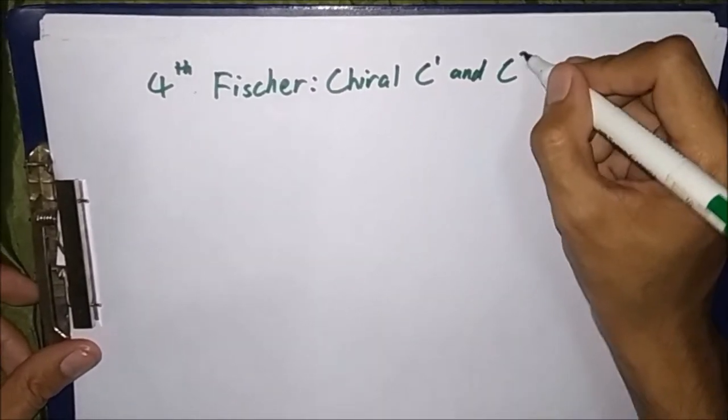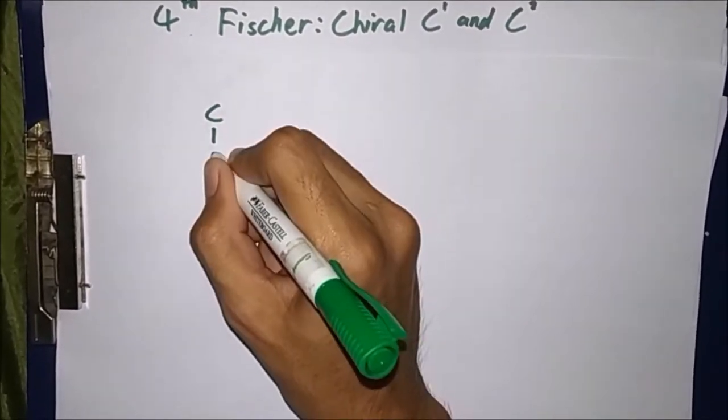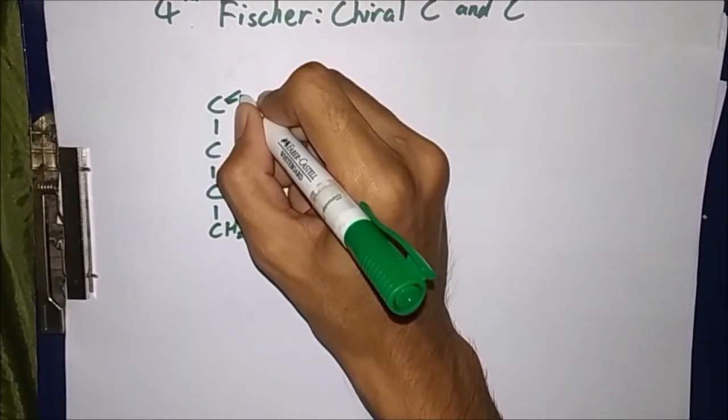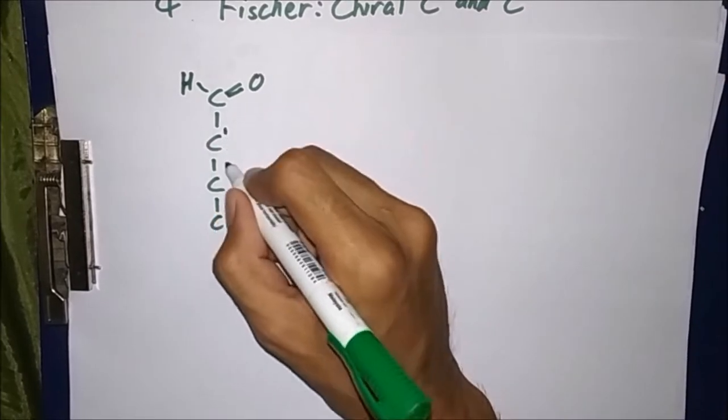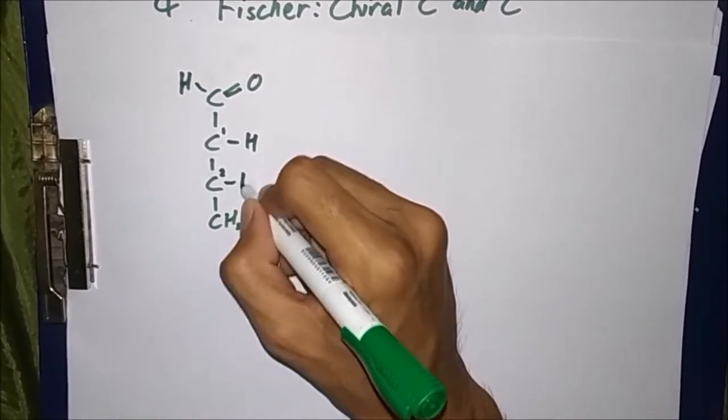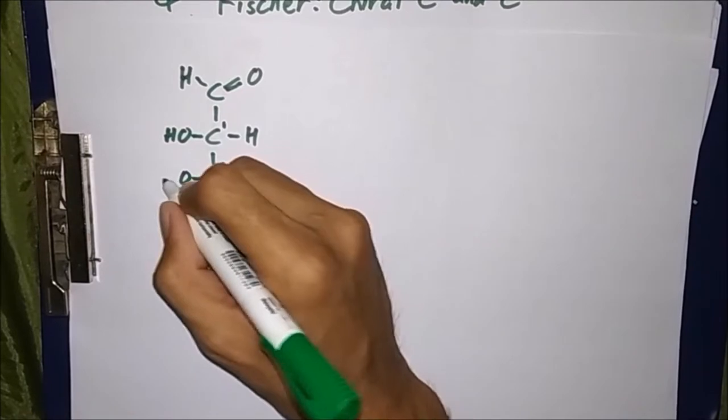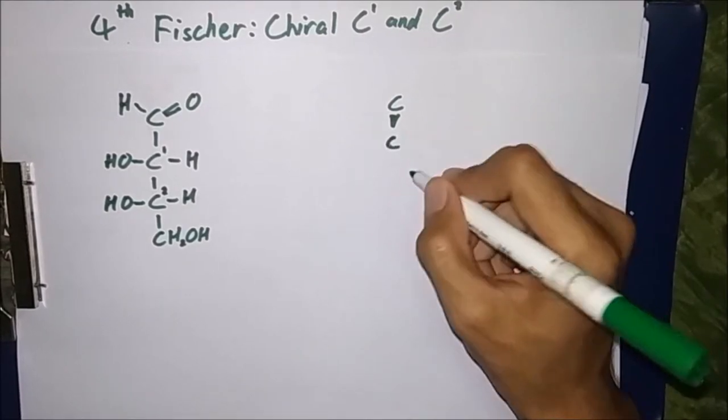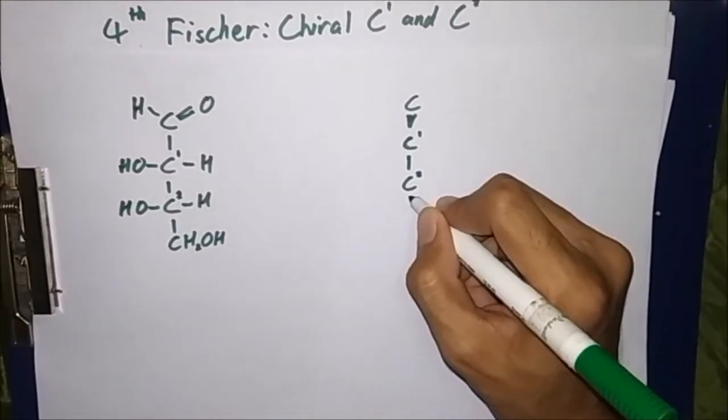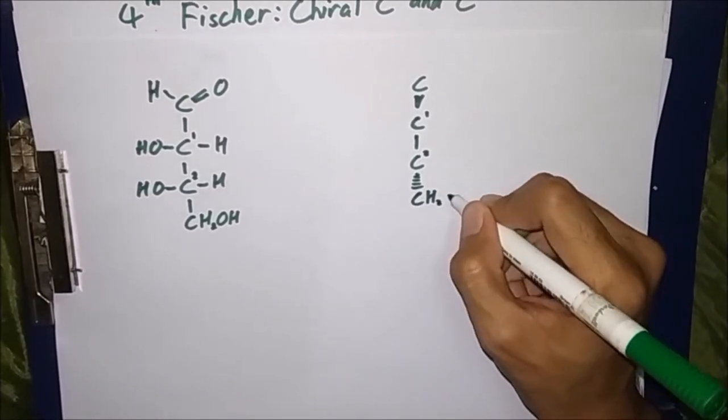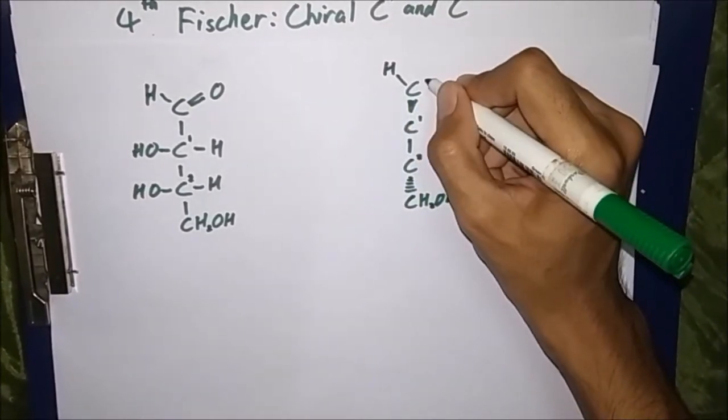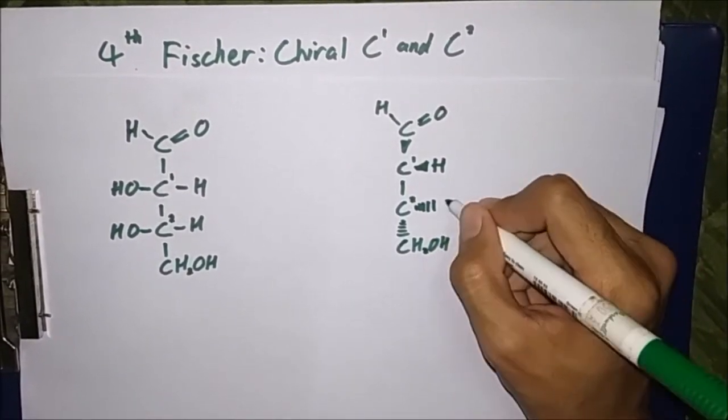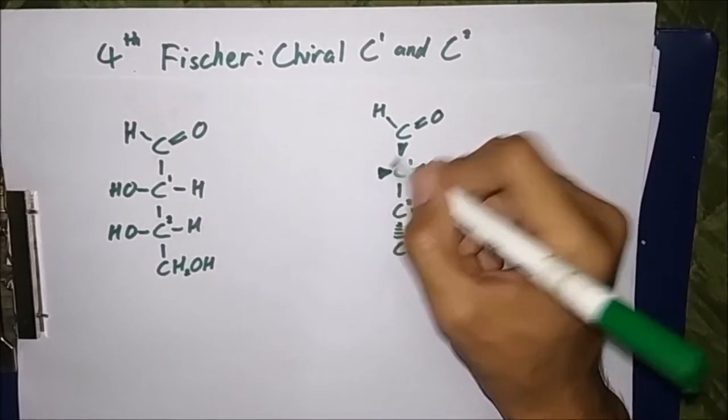For the fourth Fischer projection, it is based on chiral carbon number one and chiral carbon number two, the ones you've seen before. This means that both our hydroxyl groups are on the left side of the plane of the page.